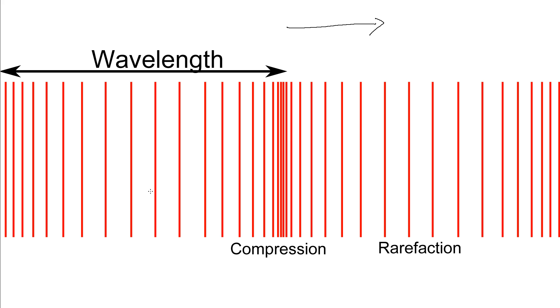So imagine these lines represent little pressure waves or lines of atoms in the air. Here they're stretched out in the rarefactions, here they're compressed together at the compressions. And so each of these, they just oscillate back and forth a little bit, and that carries the energy along the wave.